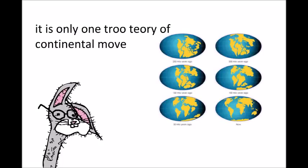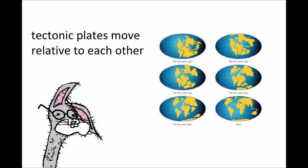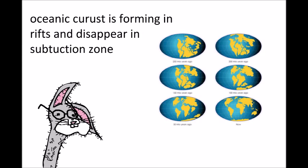It is the only one true theory of continental movement. Tectonic plates move relative to each other. Oceanic crust is forming in rifts and disappearing in subduction zones.